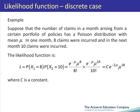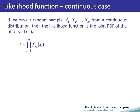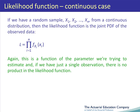Now let's think about constructing the likelihood function when we have a random sample of size n from a continuous distribution. When the random variables are continuous, instead of having a probability function, we have a PDF. So in this case, the likelihood function is the product of the PDFs, and it is a function of the parameter we are trying to estimate. If we have just a single observation, there is no product in the likelihood function.